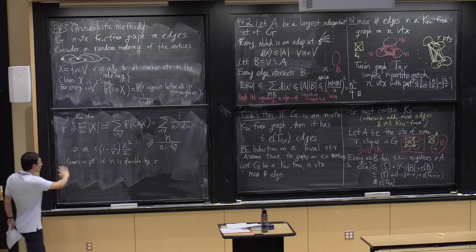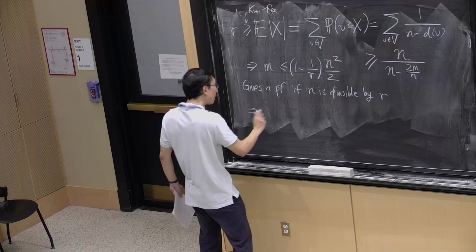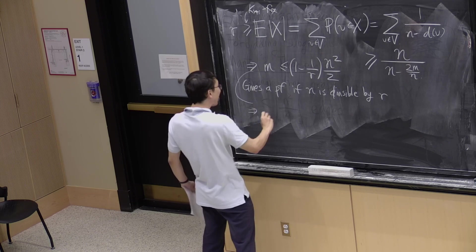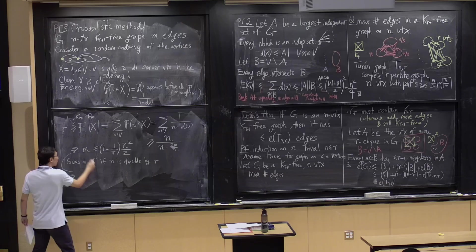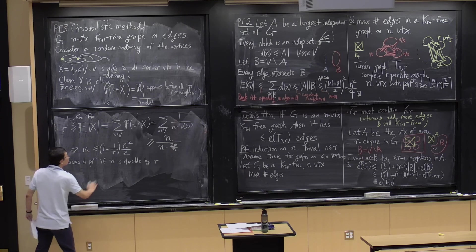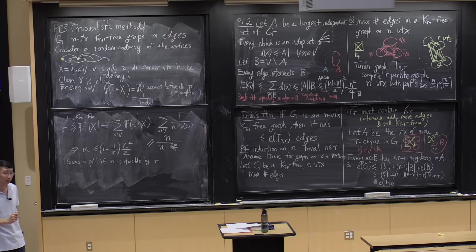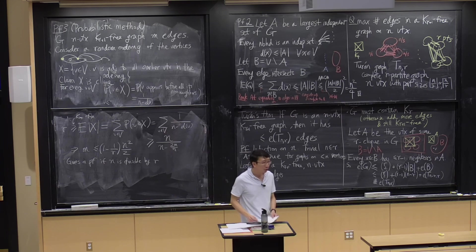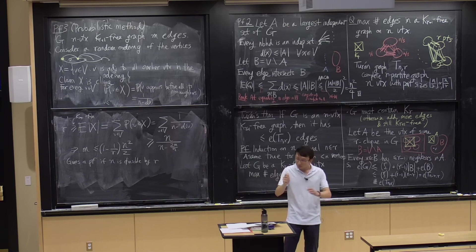With a little bit more work you can get the exact version of Turán's theorem, but at least we've shown the number of edges is at most (1 - 1/r)·n²/2, which for most purposes is basically as good as Turán's theorem. This is a probabilistic method proof: we introduced randomness into a problem that originally had no randomness.